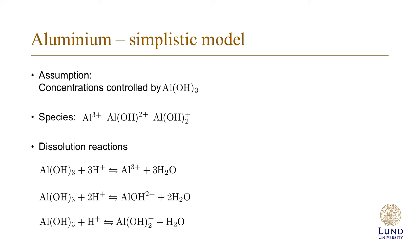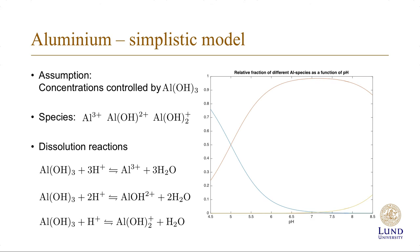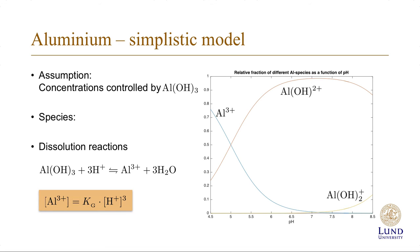If we look at the relative fractions of the species, we see that Al3 plus dominates at low pH, which we should expect because it requires most H plus to dissolve Al(OH)3. And then we have a logical sequence of the various species. But in practice, the only one that counts is actually Al3 plus.